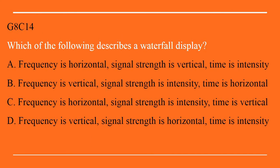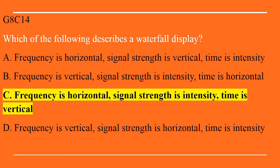G8C14: Which of the following describes a waterfall display? A. Frequency is horizontal, signal strength is vertical, time is intensity. B. Frequency is vertical, signal strength is intensity, time is horizontal. C. Frequency is horizontal, signal strength is intensity, time is vertical. Or D. Frequency is vertical, signal strength is horizontal, time is intensity. The correct answer is C: frequency is horizontal, signal strength is intensity, time is vertical.